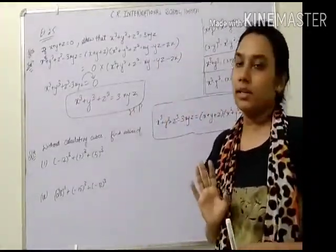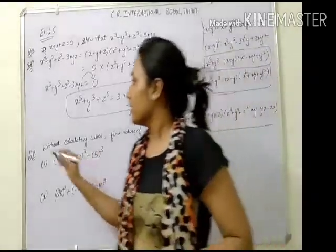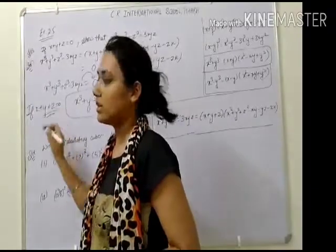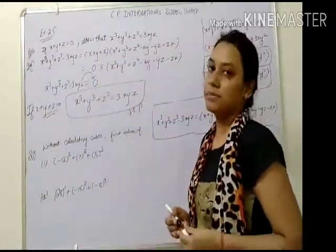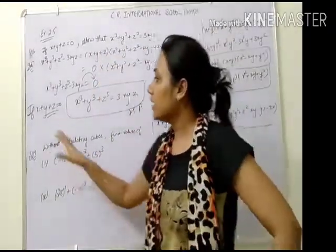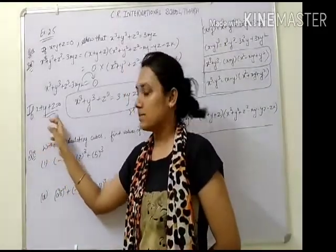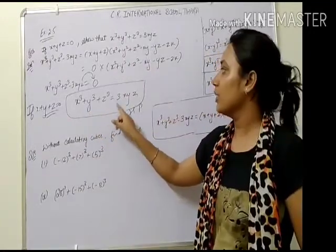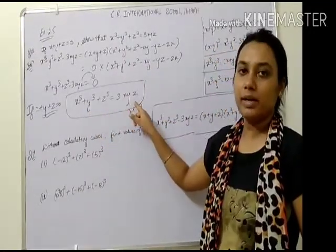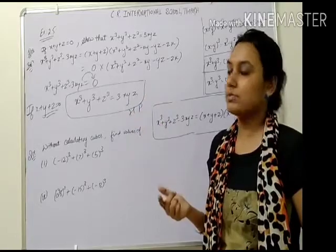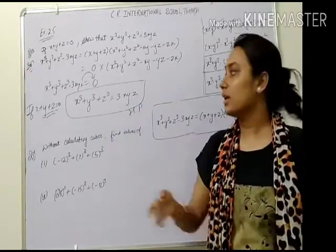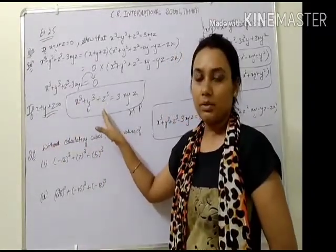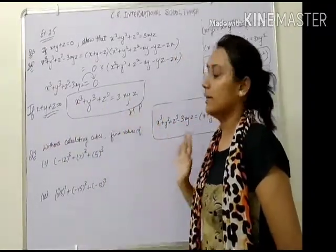This is a most important result. If the sum of three numbers is 0, then the sum of their cubes equals 3 times the product of those three numbers — that is, x cubed plus y cubed plus z cubed equals 3xyz. This result is very useful in competitive examinations.